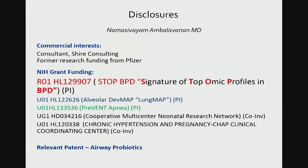These are some of my disclosures. I really want to focus on this NHLBI-funded project, STOP BPD — Signature of Top Omic Profiles in BPD. Some of the data in this presentation comes from that. The Lung Map Project focuses on the mechanisms underlying normal lung development, because if you don't understand how the normal lung develops, how are we going to understand abnormal lung development, or BPD? And PREVENT, a new U01 project, focuses on control of breathing and how it is associated with abnormal long-term respiratory outcomes such as BPD.